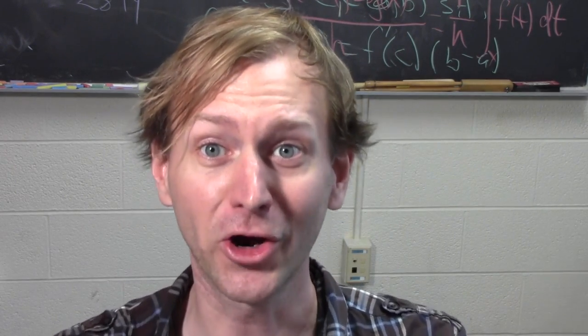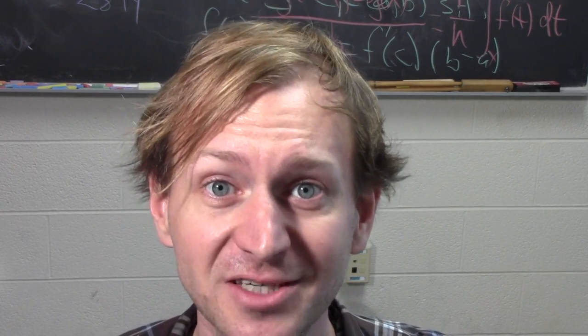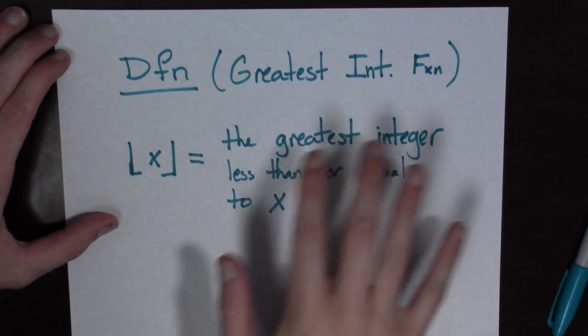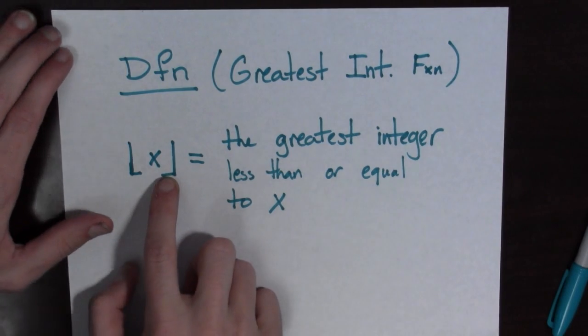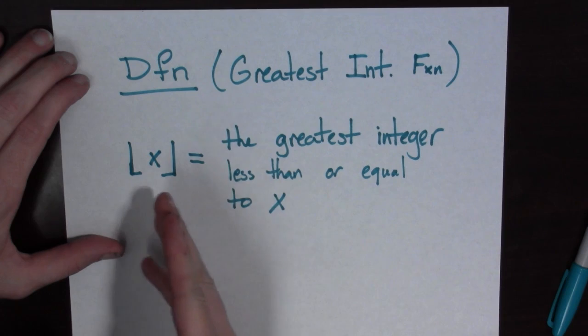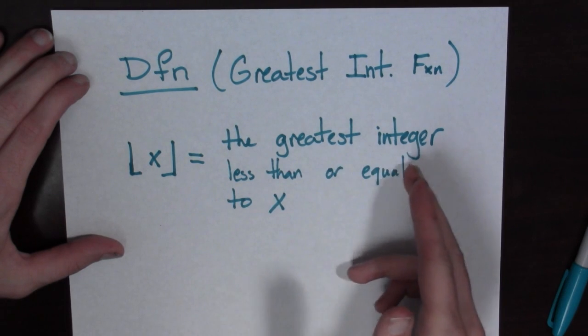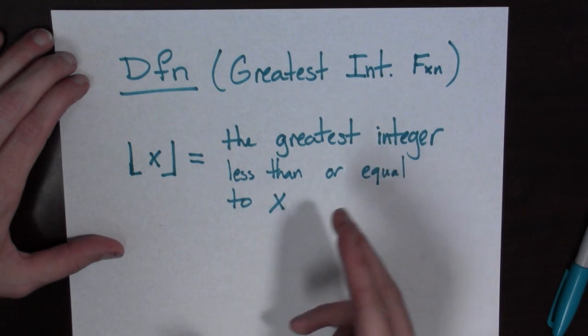What's this? You've never heard of the Greatest Integer Function? So the Greatest Integer Function, which we denote by these funny bracket thingies, takes a real number x and outputs the greatest integer that's less than or equal to x.